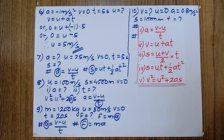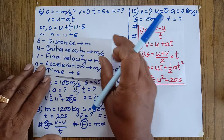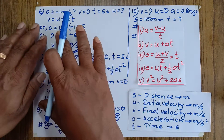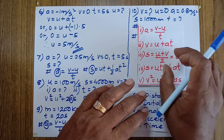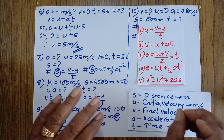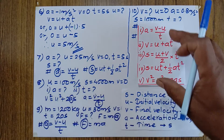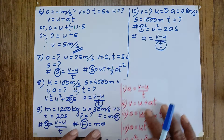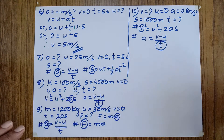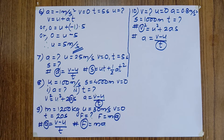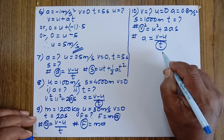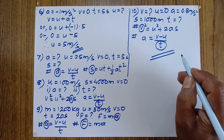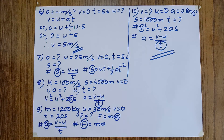We must have a clear idea of the five equations of motion, their symbols, and their meanings to select the right equation for each problem. The key skill is planning which equation to use rather than just getting the answer. If you found this class beneficial, please subscribe to the channel, like the video, and share it with your friends.